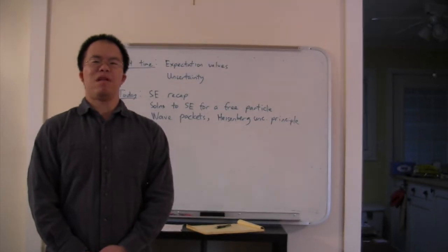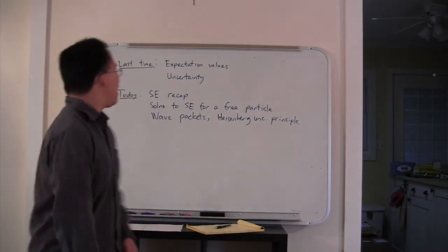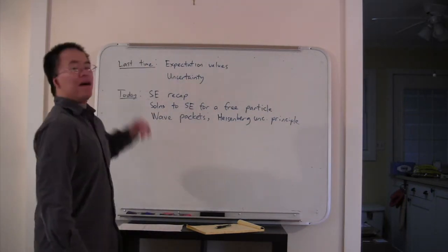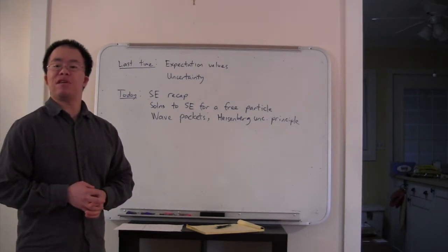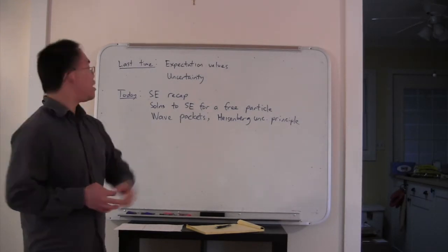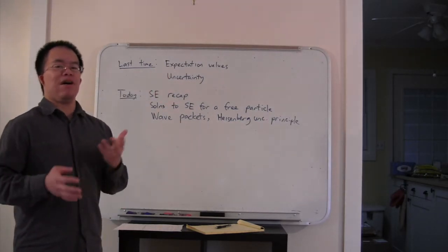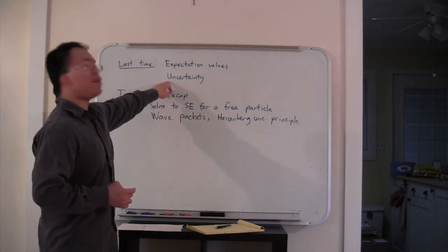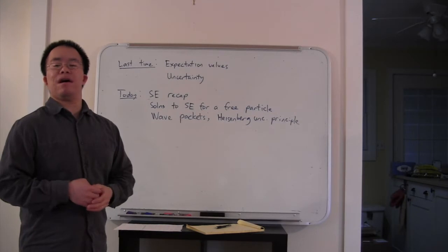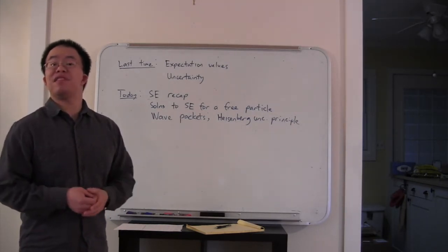Hello everybody, and welcome to class number 22 of Physics 218. Last time, we were talking about statistics ideas that are useful in quantum mechanics. We talked about expectation values, which is a fancy way of saying average values, and uncertainty, which is a fancy way of saying standard deviation.